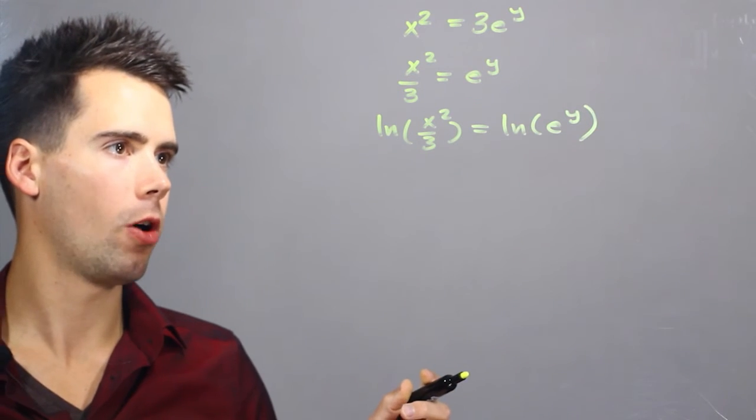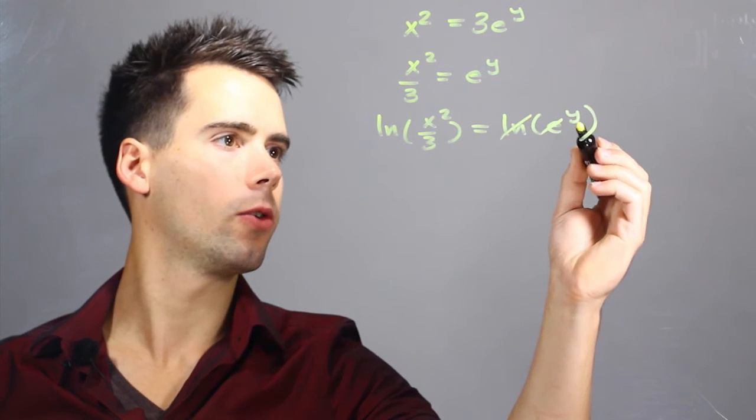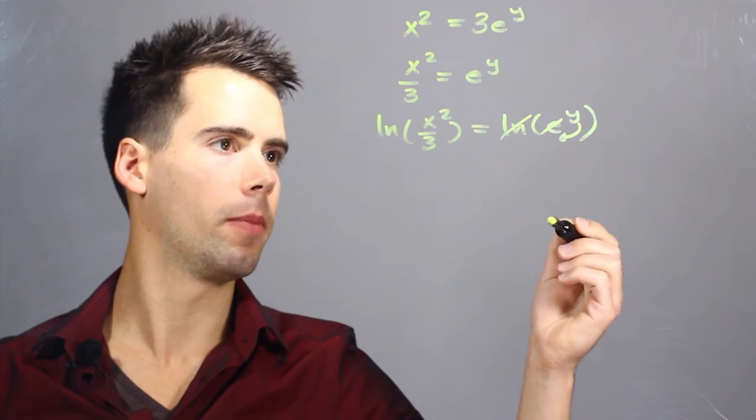And using the natural log rules we find that the natural log and the e cancel and the y comes down to the base.